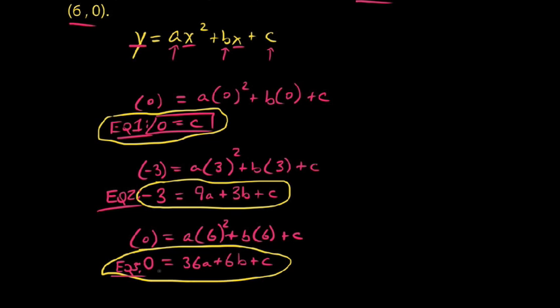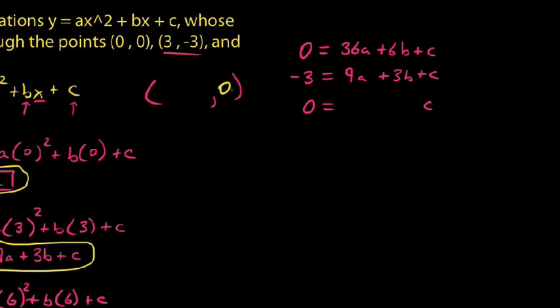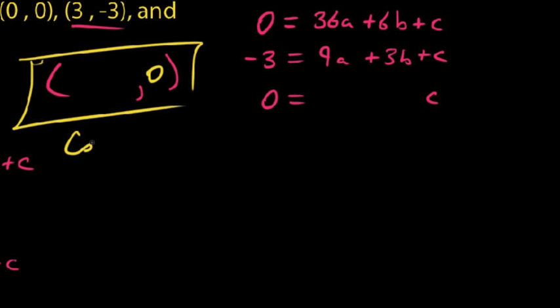Now that we have these three equations, we can set up our system. I'm arranging these in row echelon form: 0 = 36a + 6b + c, -3 = 9a + 3b + c, and 0 = c. The first thing to note is we already know c = 0. This is good because it means we have a consistent system, which contains at least one solution. We're going to get a consistent independent answer.